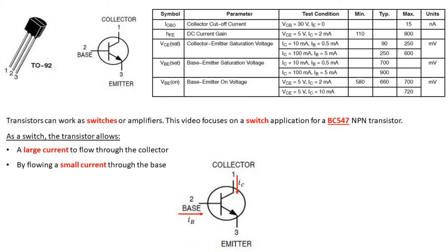As a switch, the transistor basically allows a large current to flow through the collector, marked in the diagram below, by flowing a small current through the base, as you can see as IB. These two then join and exit at the emitter.